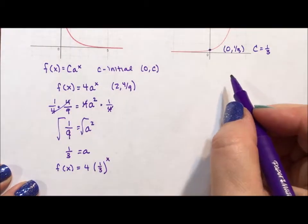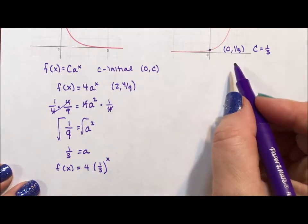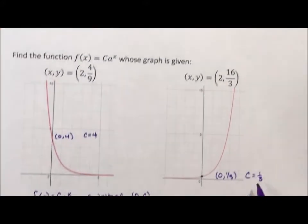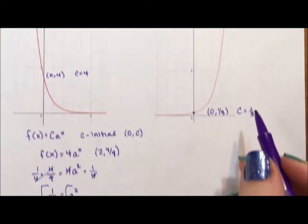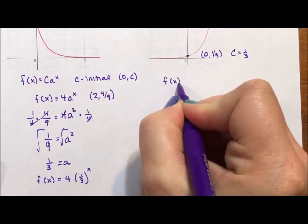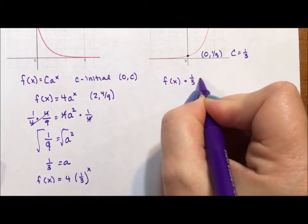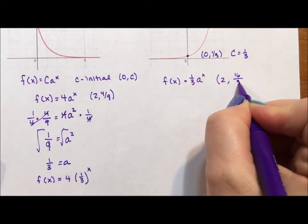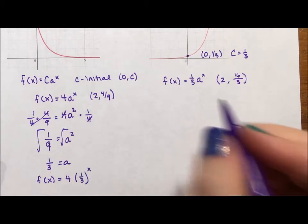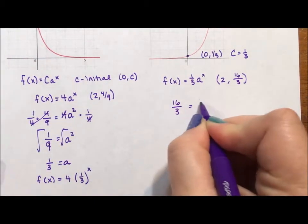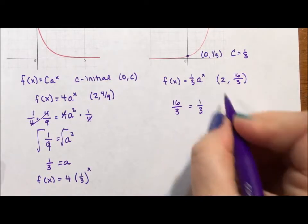For this next problem, we know that the initial value is 1/3. And at that point, we're going to use this (2, 16/3). So we have f(x) = (1/3)a^x and the ordered pair (2, 16/3). So we plug it in again.